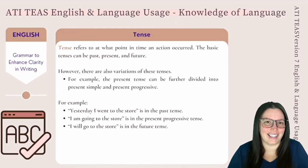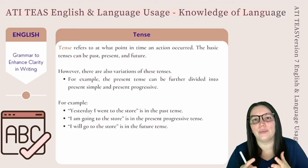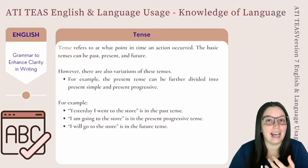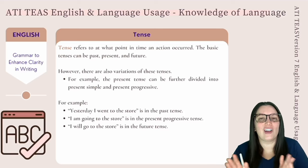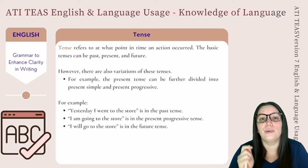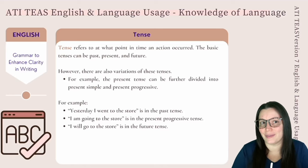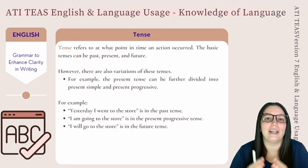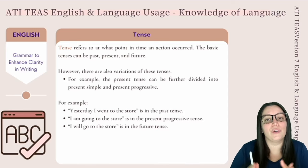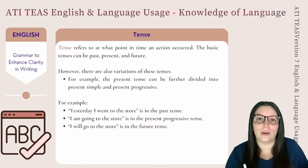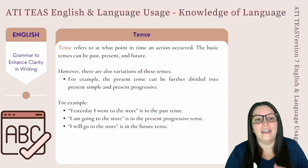Let's talk about tense. Tense refers to at what point in time an action is taking place. The basic tenses can be past, present, and future. However, there are also variations of these tenses. For example, the present tense can be further divided into present simple and present progressive. It is important to be able to identify the use of the appropriate tense when you are writing or reading a passage. For example, yesterday I went to the store — this is past tense, this happened in the past.